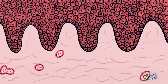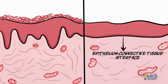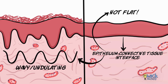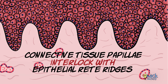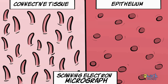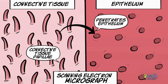How does the epithelium sit on the connective tissue without ripping apart? One reason is that the epithelial-connective tissue interface is not flat. The interface is rather undulating or wavy, in which the connective tissue papillae interlock with the epithelial ridges. Scanning electron micrographs show that connective tissue has numerous conical papillae jutting out and penetrating the epithelium, thus giving it a firm attachment.